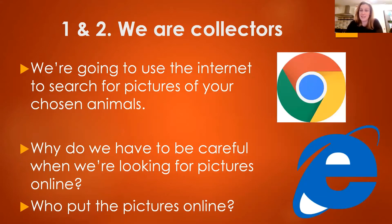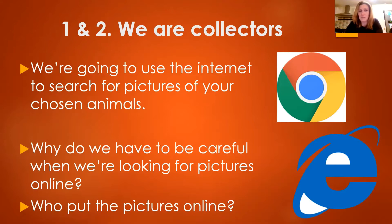We're going to use the internet to search for pictures of your chosen animals. You can see two pictures on the screen: one is a big blue 'e' — that is the symbol for Internet Explorer — and the other is a red, yellow, and green circle, which is the symbol for Google Chrome. Both of these are search engines, meaning you can type in what you want to look for and they'll search millions of internet web pages to find it.